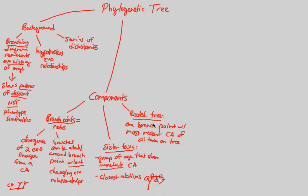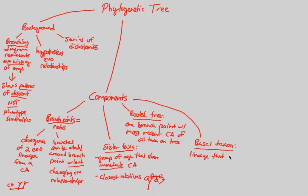Another component is something known as the basal taxon. Basal means very basic, simple, rooted, and rudimentary. A basal taxon is a lineage that diverges early on — one of the first species to develop, usually very close and near to the common ancestor. Look at your textbook for a nice picture of a basal taxon and all these components encompassed in the figure.